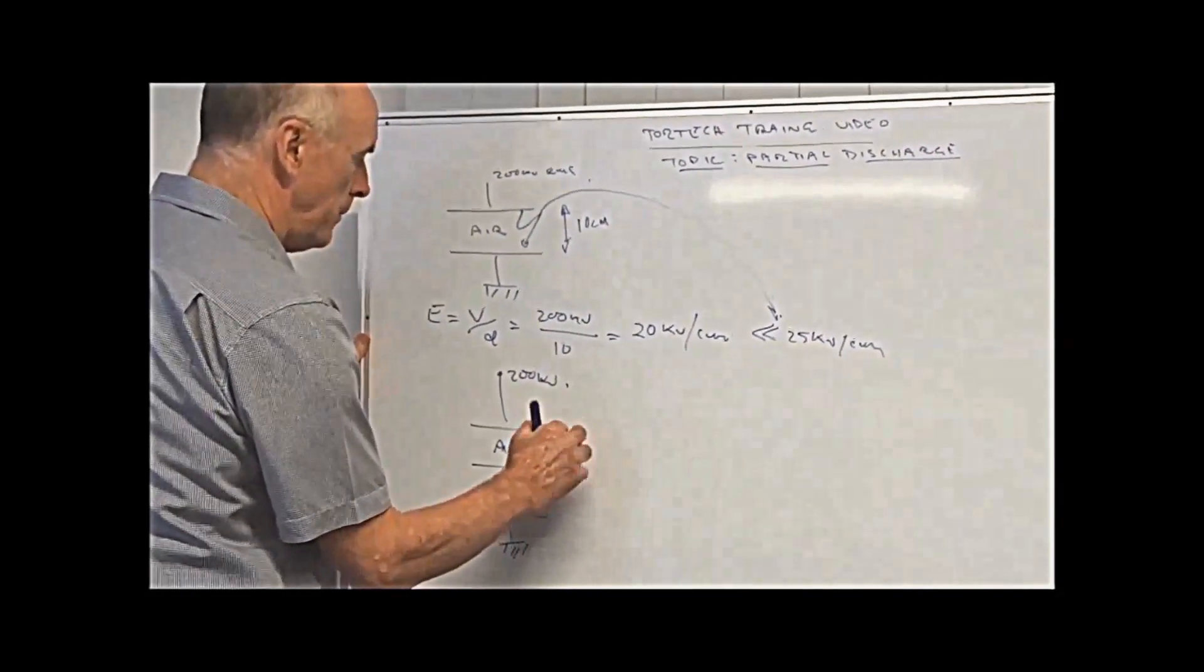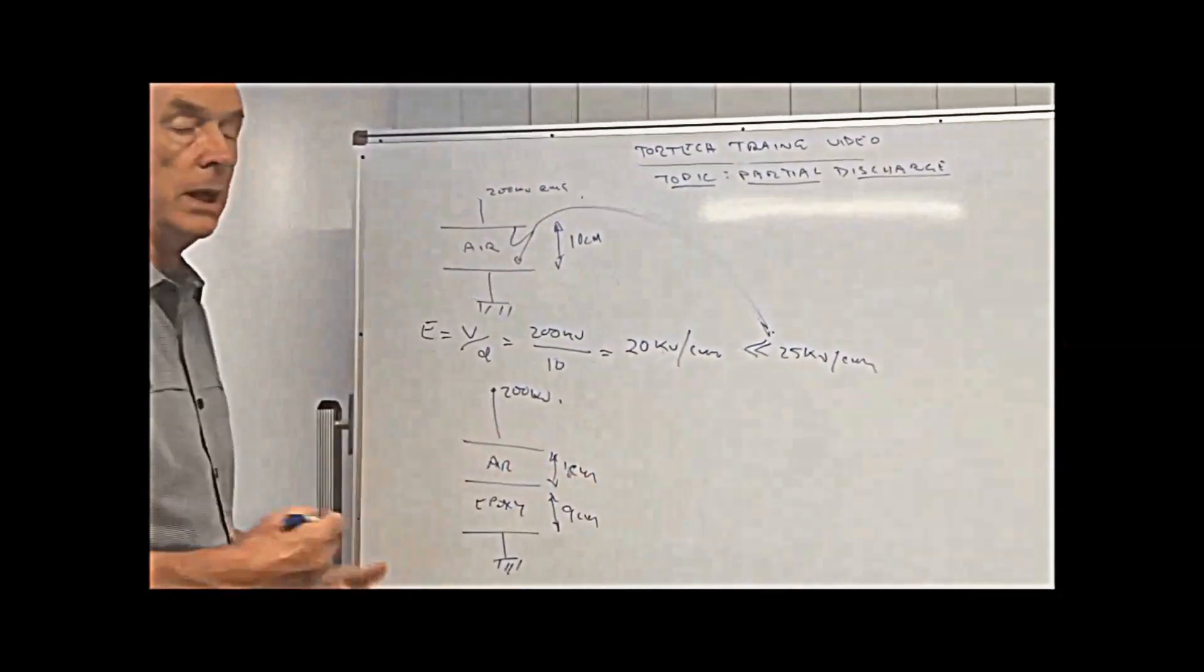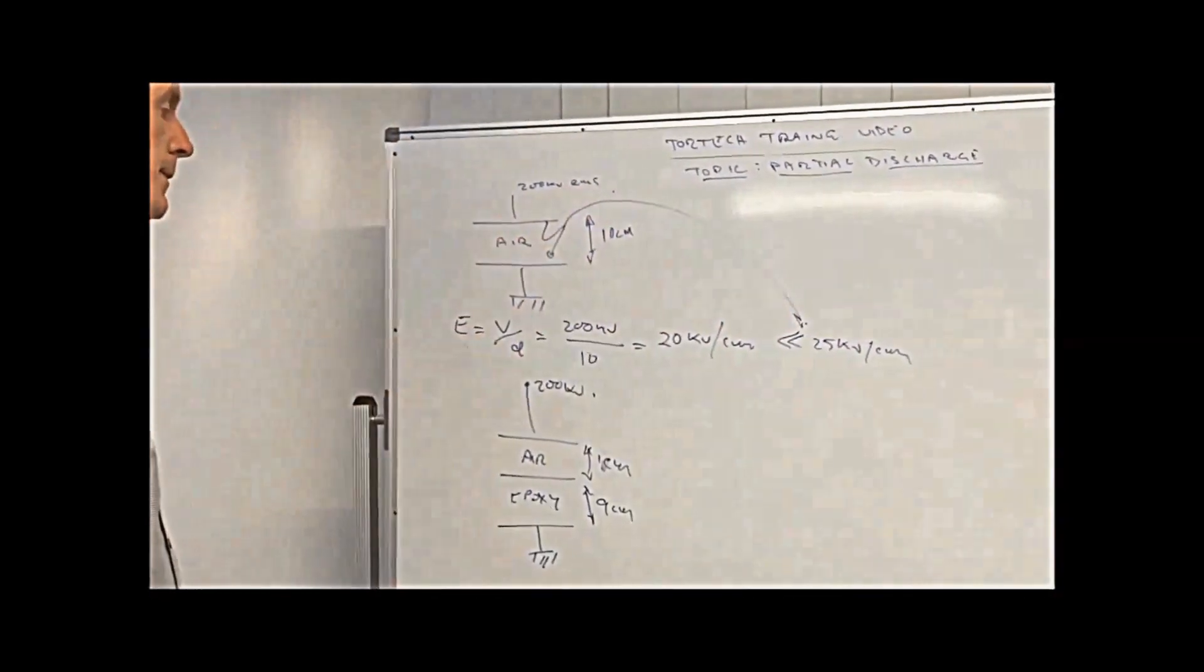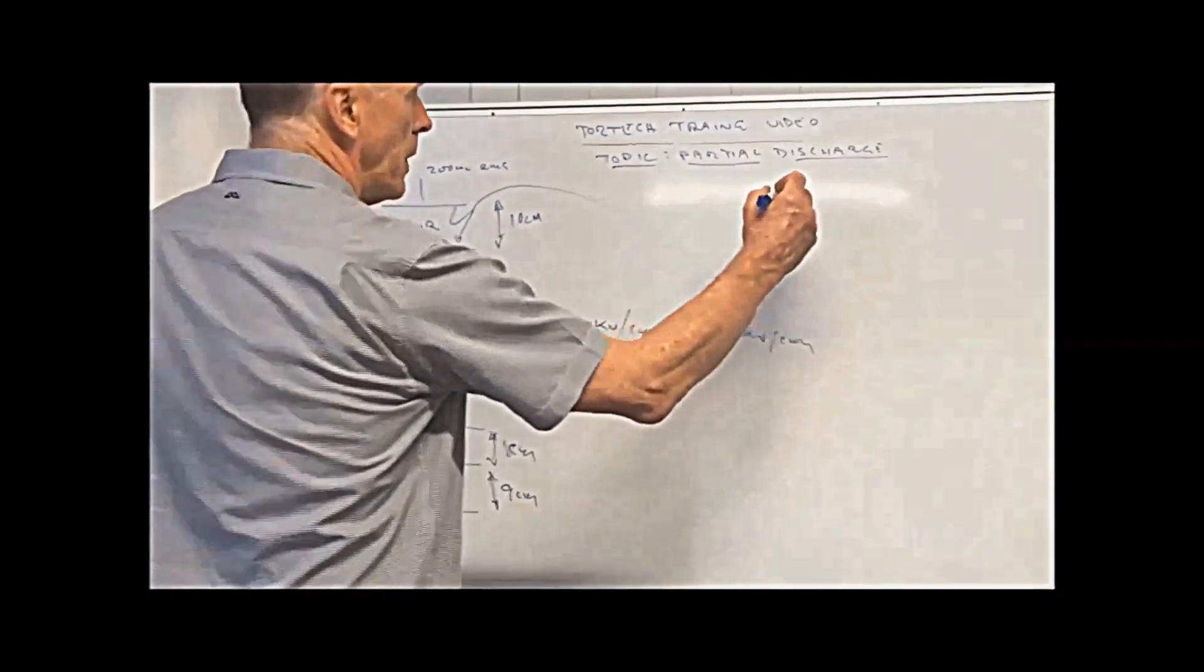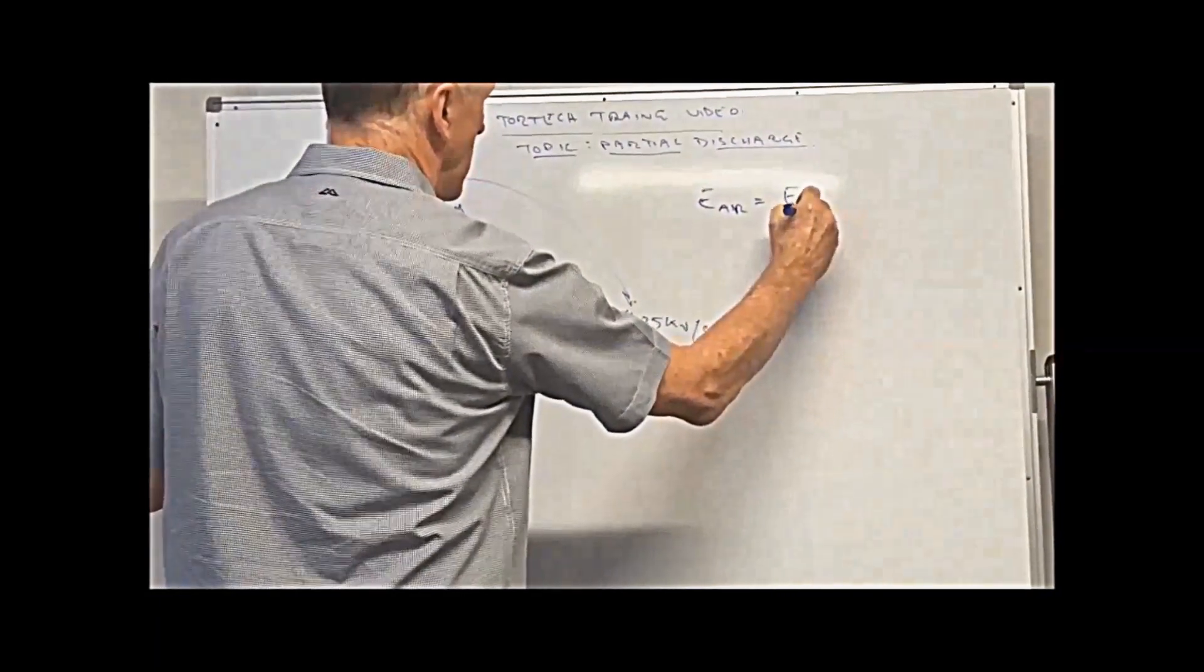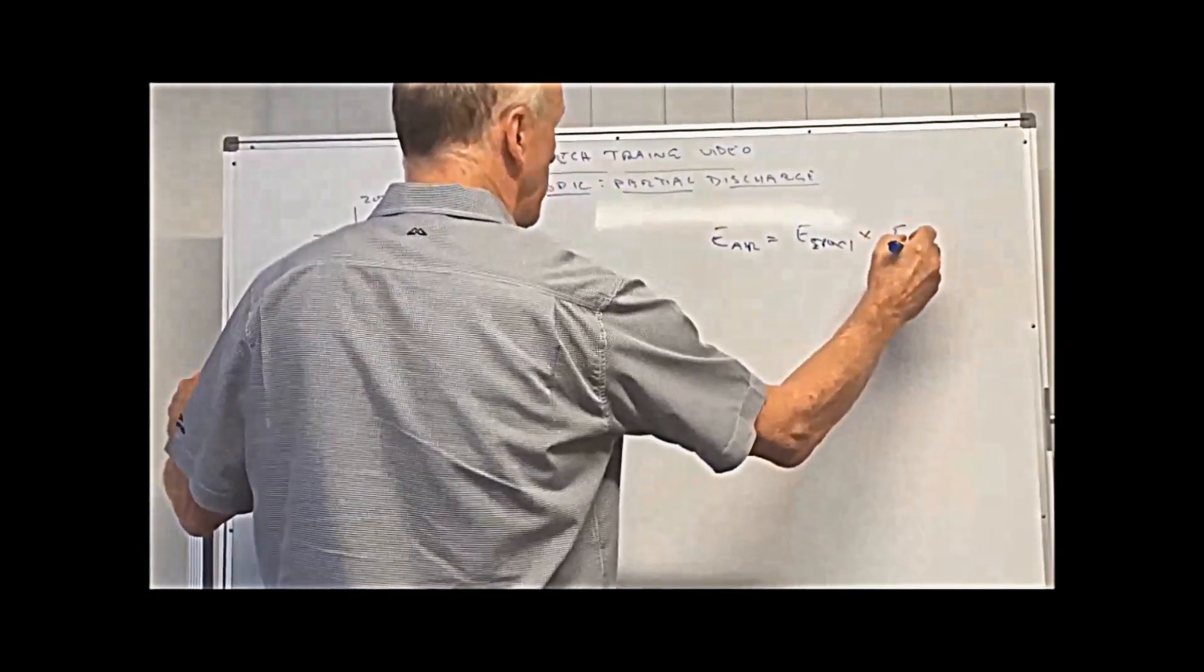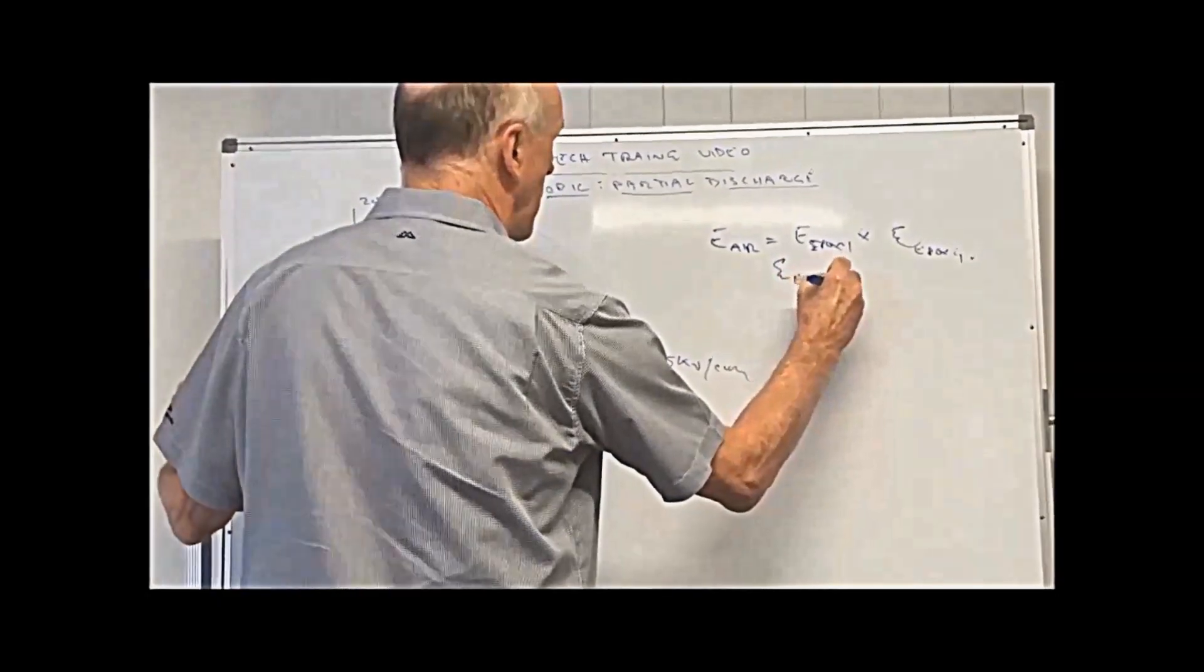And let's say that that distance there is one centimeter, and that distance is nine centimeters. Normally, you would think that is a better insulation structure and stronger because epoxy has a much higher breakdown stress or inception stress than what air has. But that is a bit of a misnomer, because the electric stress in the air is equal to the electric stress in the epoxy multiplied by the permittivity for epoxy. And the permittivity of the epoxy is approximately equal to three.